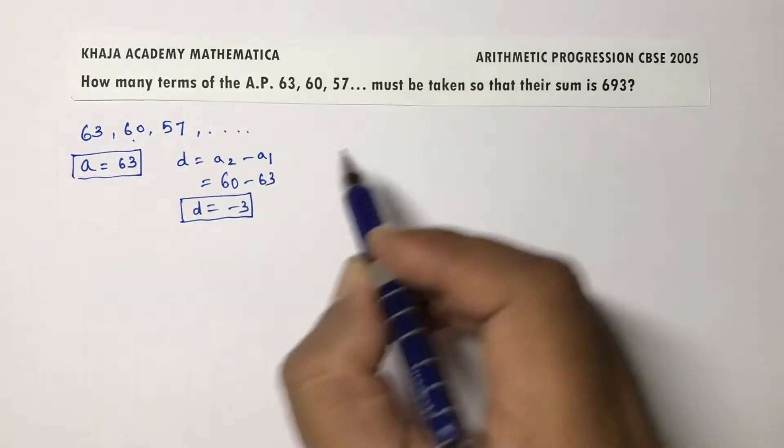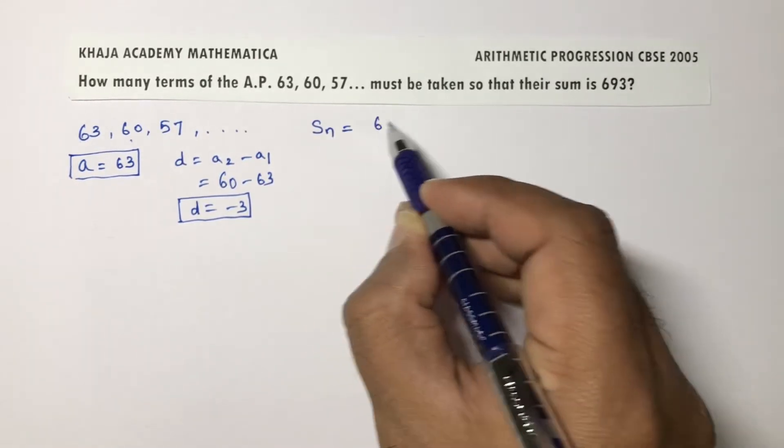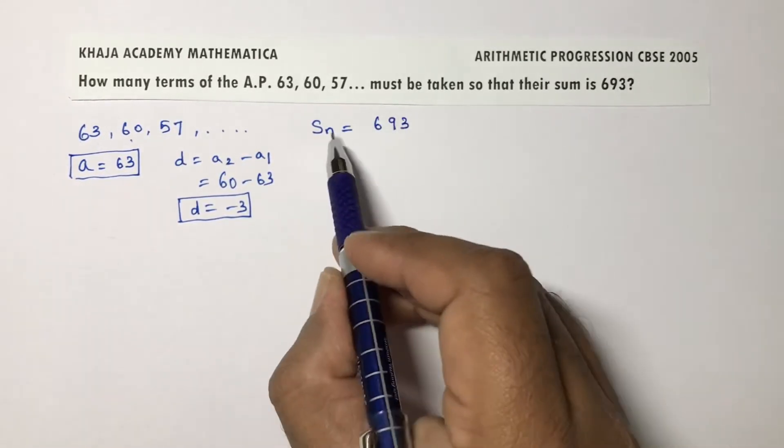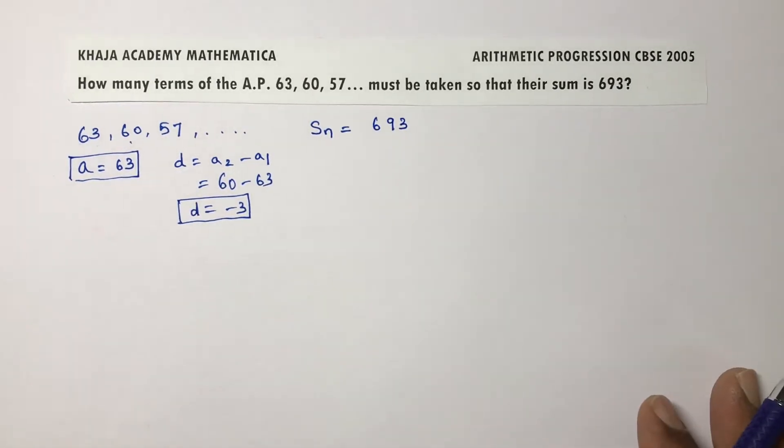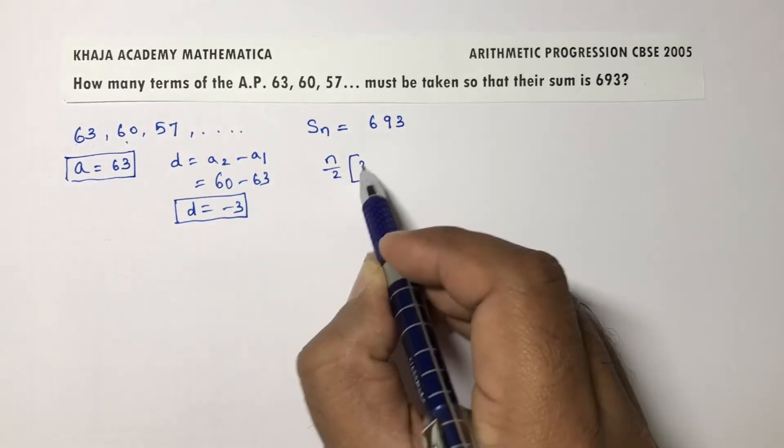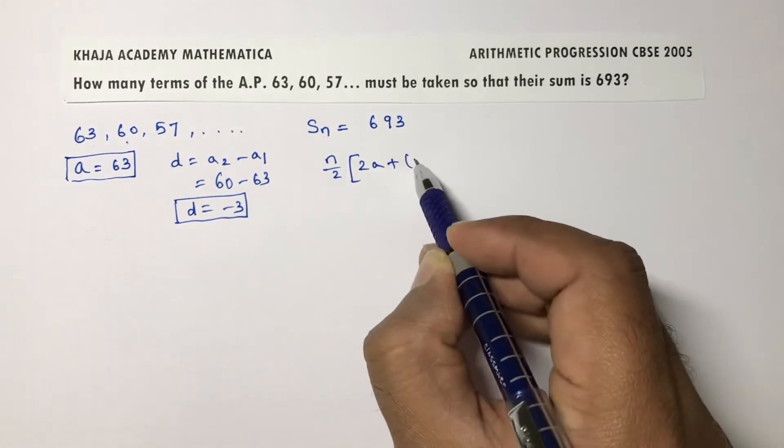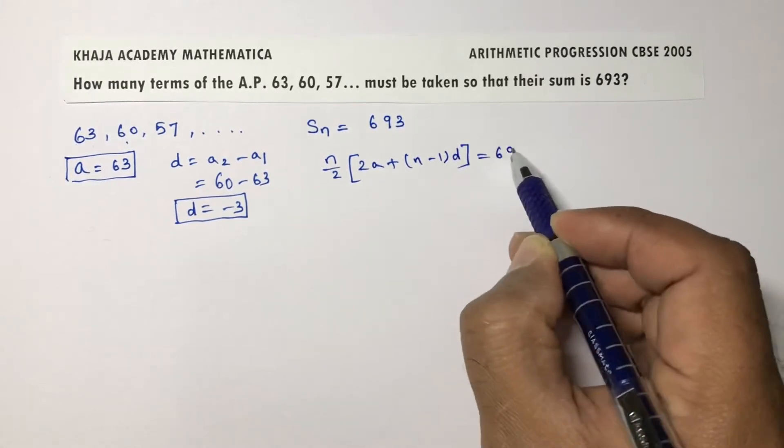The sum of n terms is 693. How many terms will they add so that the result is 693 is the question. Now the Sn formula I will write: n by 2 into 2a plus n minus 1 into d equals 693.